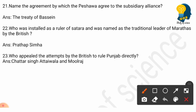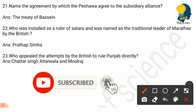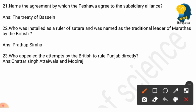Question 23: Who opposed the attempts by the British to rule Punjab directly? Answer: Chattar Singh Attariwala and Mulraj opposed the British attempts to rule Punjab directly.